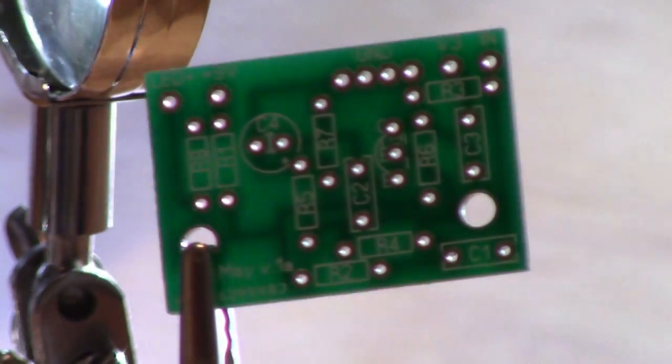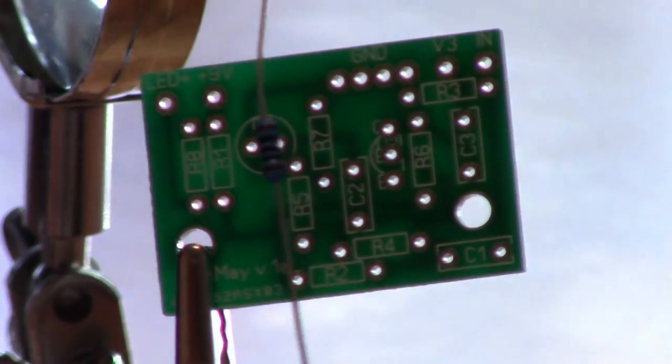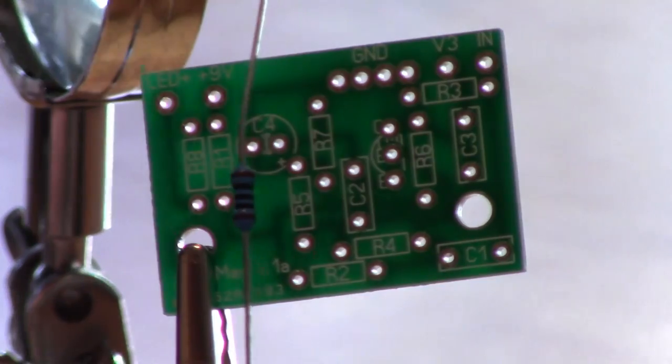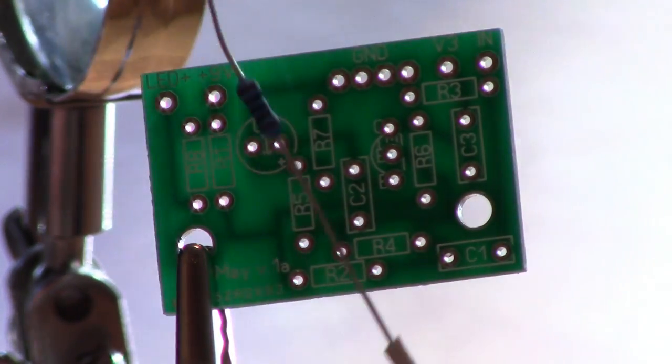Let's show you how to solder R1 to the board. Like we said before, direction does not matter. The only critical thing is that you install the correct resistor to the proper location on the board.